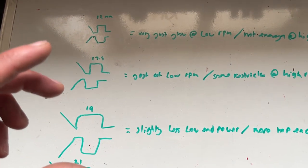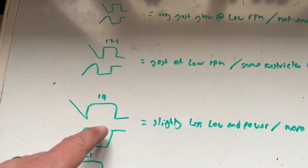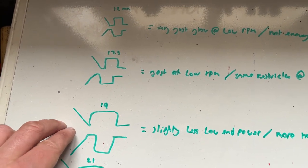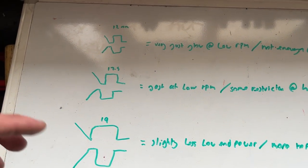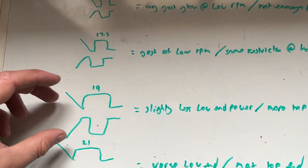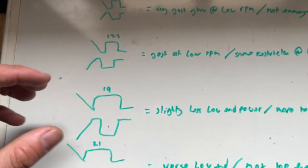So once you start going to a bigger carburetor, let's take the 19mm for example, this is where things start to slow down a bit. What's going to happen is because we've got a bigger opening at the higher RPMs at the top end, you are going to gain a bit because the carburetor is able to flow more air at those higher speeds.